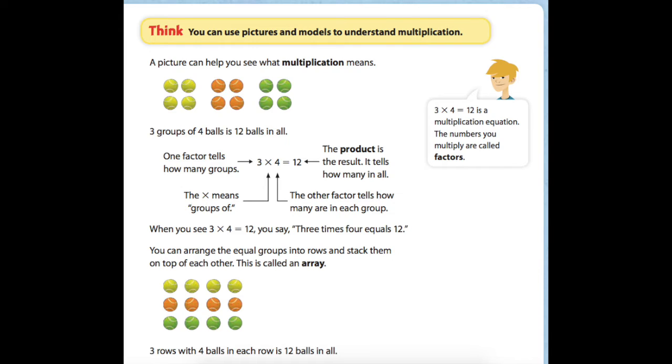Think: you can use pictures and models to understand multiplication. A picture can help you see what multiplication means. Let's take a look at this picture. We have three groups - a yellow group, an orange group, and a green group. Each of these groups has four balls, so the total is how many in all? Three groups of four balls is how many in all?